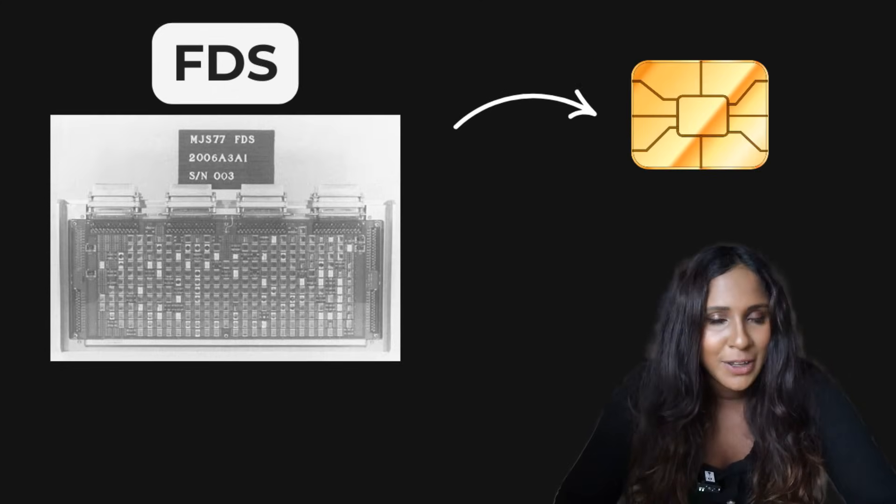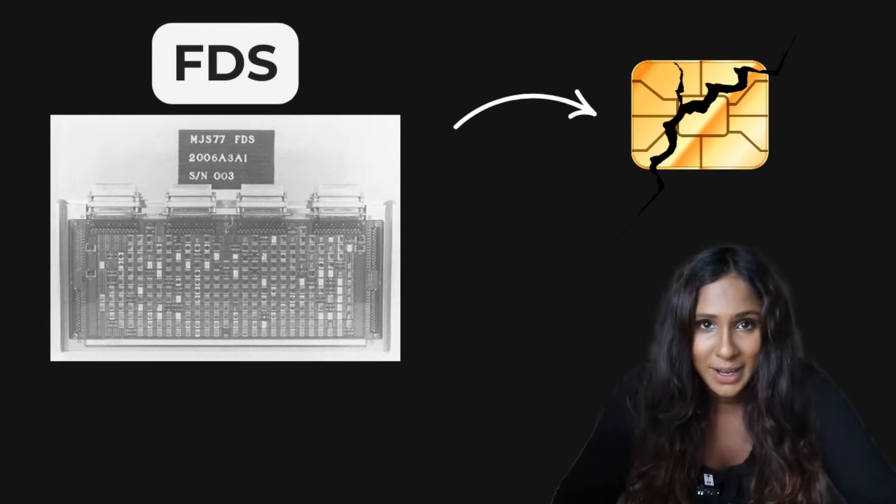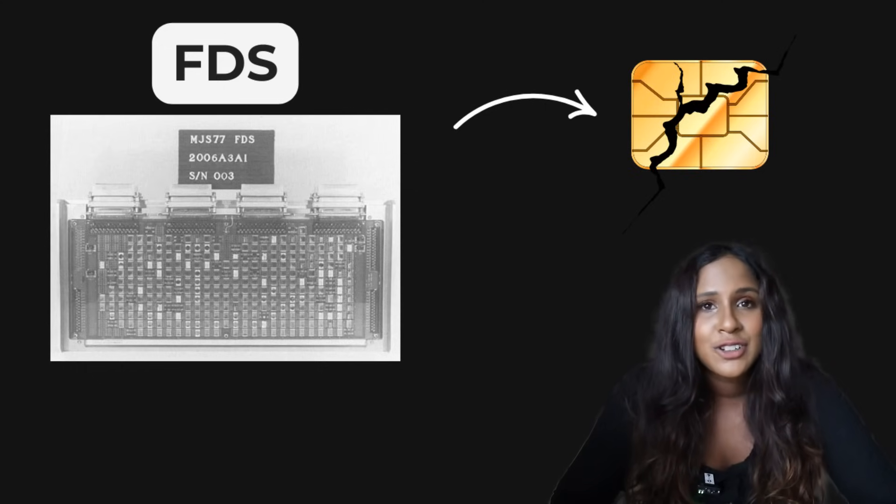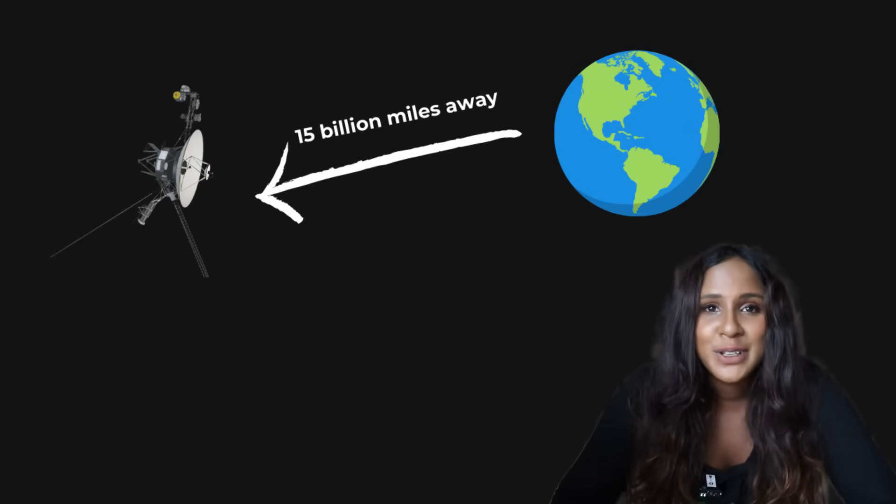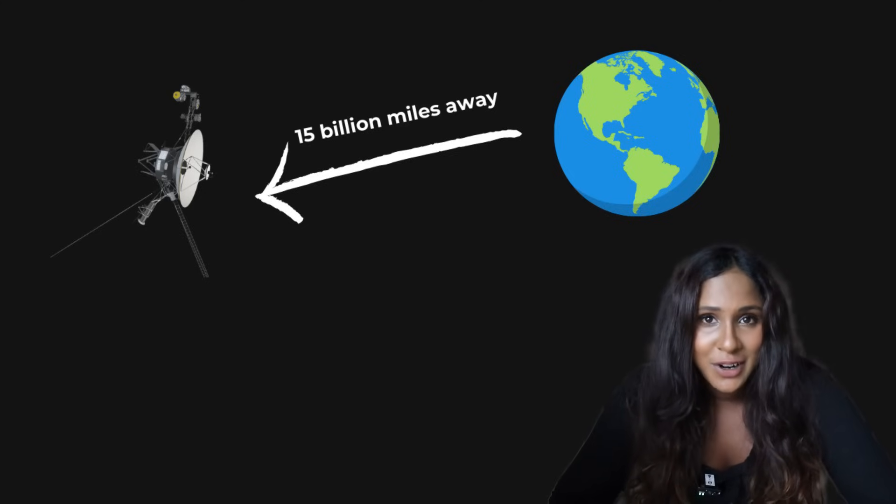And this was a goldmine because it then showed them exactly where the problem was. A specific memory chip in the flight data subsystem had gone bad. And this faulty chip actually stored some important code. Now, in normal circumstances, one would call the instrument back to Earth, replace the chip, and send it back on its way. But Voyager 1 was 15 billion miles away, so they couldn't do that. Engineers came up with a smart workaround.